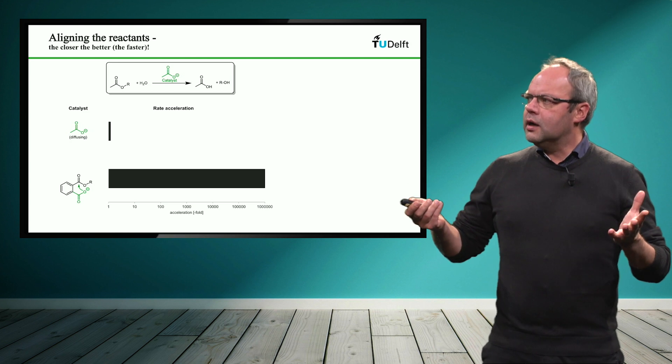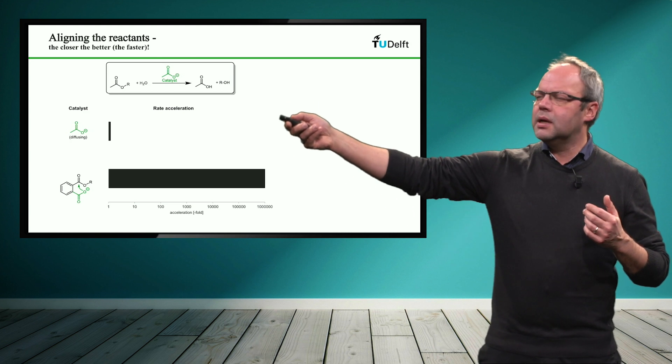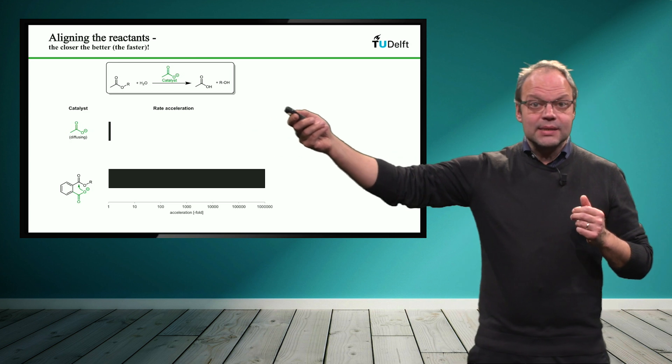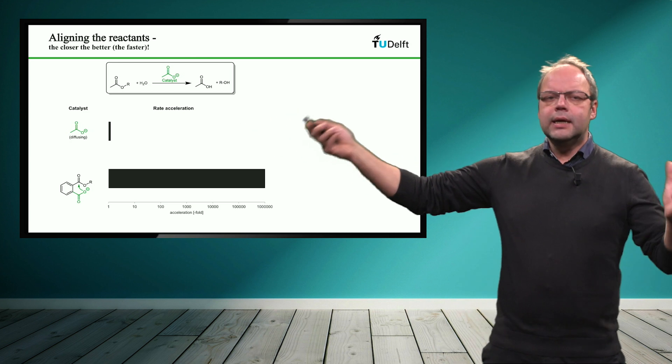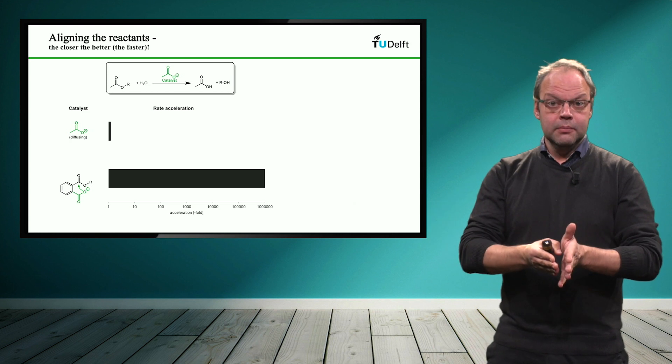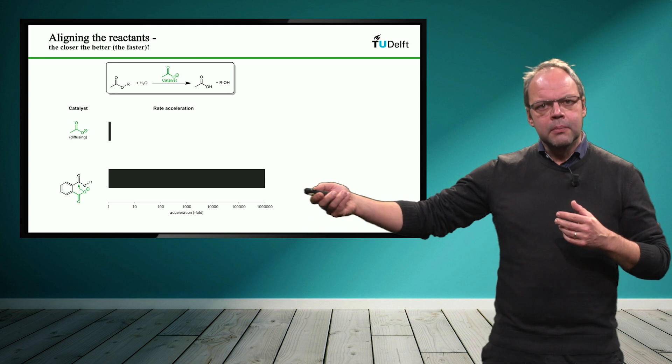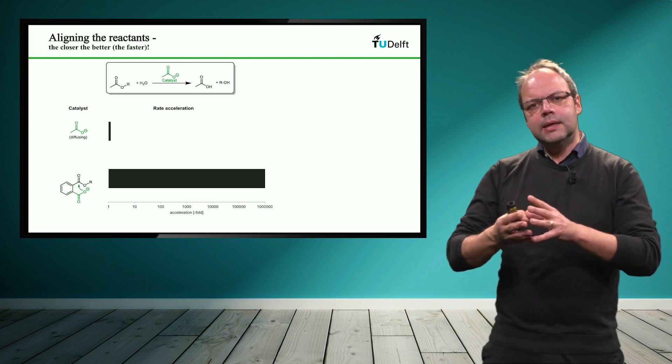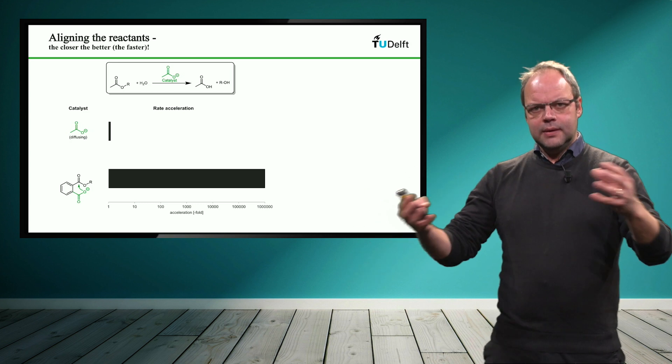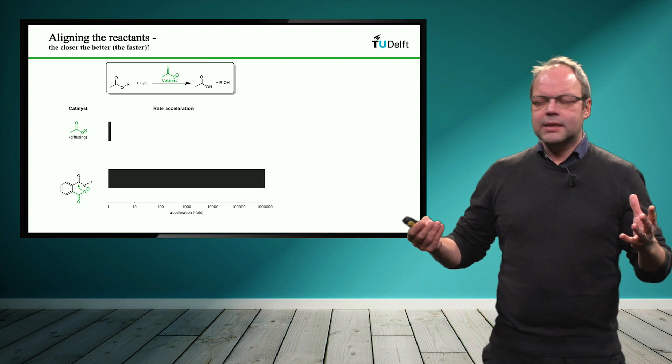So what a colleague of mine actually did, he was comparing the rates of this very simple chemical reaction by putting the catalyst, the acetate shown in green here, into the reaction mixture, putting the rate of this reaction to one. And then what they did was, they actually built in the catalyst covalently into the molecule itself. So they were basically eliminating the diffusion limitation for the catalysis reaction.